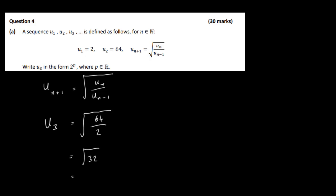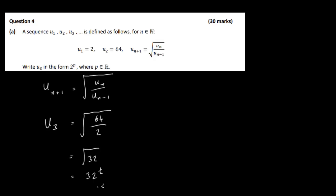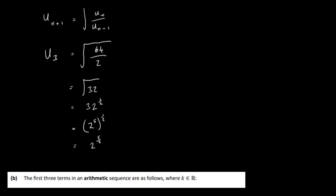The square root of 32 is 32 to the power of a half. We want this in the form 2^p. Since 32 = 2^5, we have (2^5)^(1/2) = 2^(5 × 1/2) = 2^(2.5), which we write as 2^(5/2). So p = 5/2 and that's our answer.